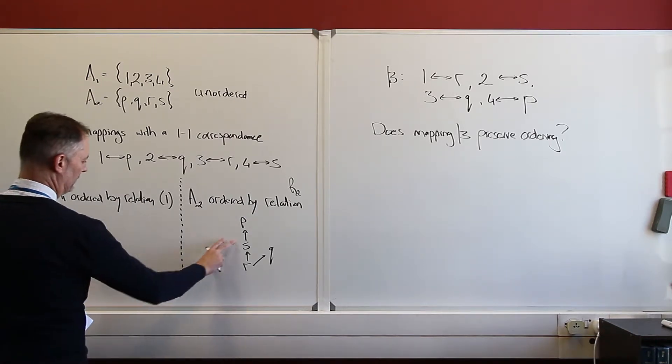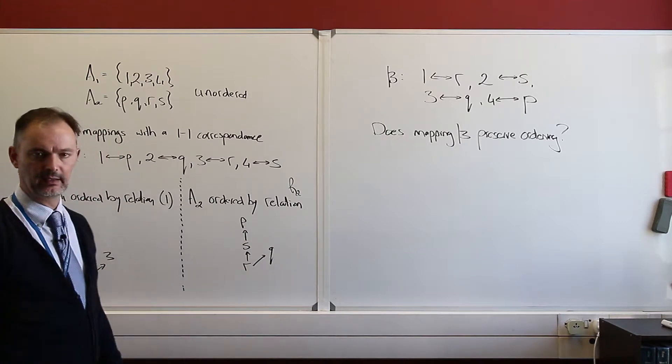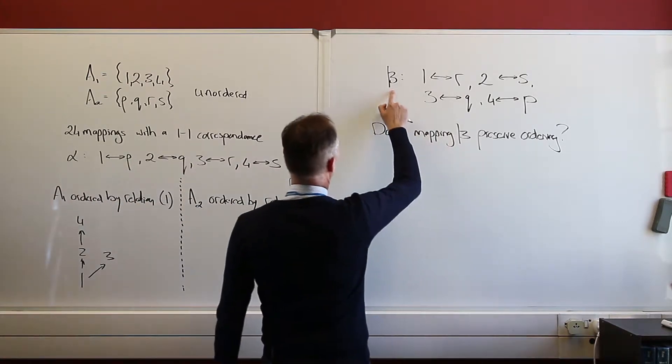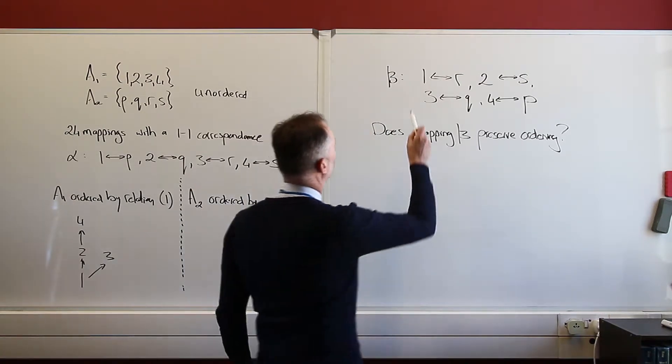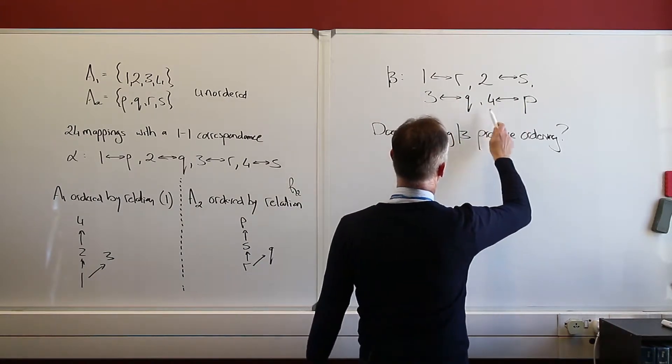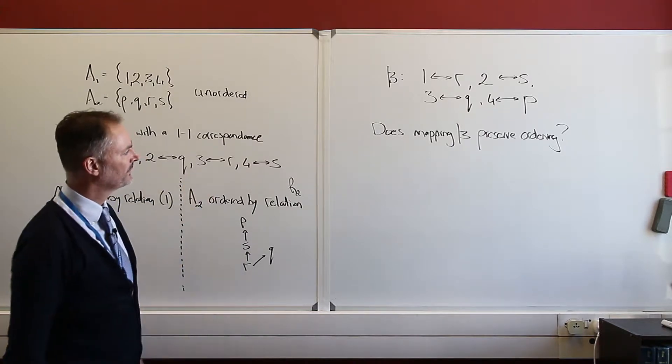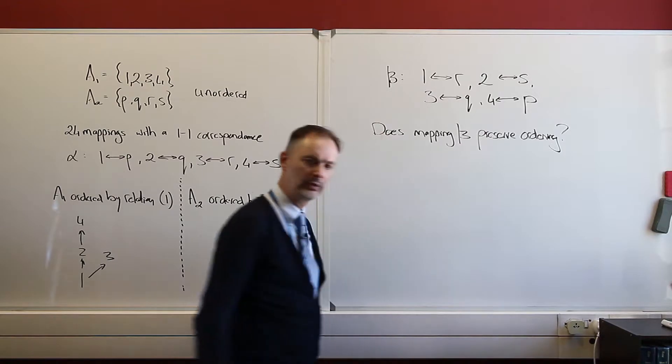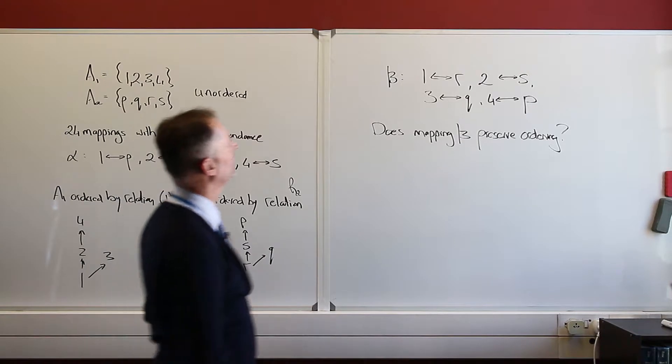So I've got this ordering here, and this is my ordering by this relation, a relation ordering, and this is my other relation that gives me order. Now consider my following, another one of my two mappings, that gives me 1 to 1 correspondence. So 1 to r, 2 to s, 3 to q, and 4 to p. So you can well see that that is different from this one. Now does this mapping beta preserve the ordering that this relation has brought in. So let's do that.